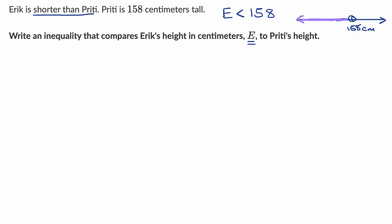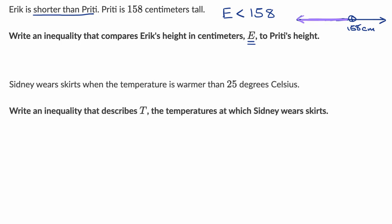Let's do another example. Here, we are told that Sydney wears skirts when the temperature is warmer than 25 degrees Celsius. Write an inequality that describes T, the temperatures at which Sydney wears skirts.